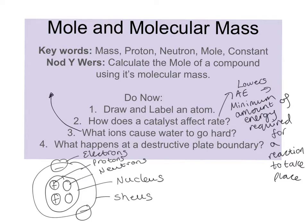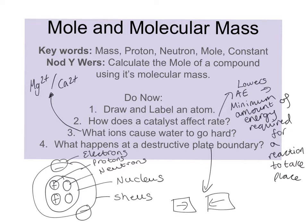What causes water to go hard? Magnesium and calcium ions. What happens at a destructive plate boundary? At a destructive plate boundary, plates move towards each other; the more dense plate goes underneath and gets forced into the magma, melts - and this is how we form new land.